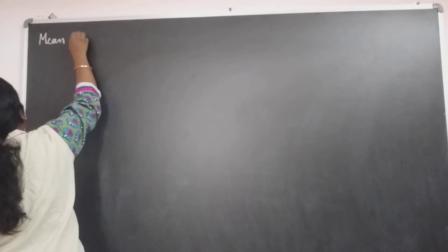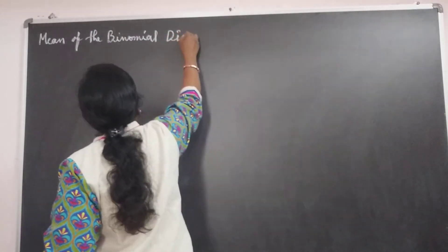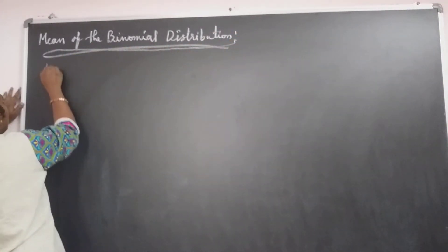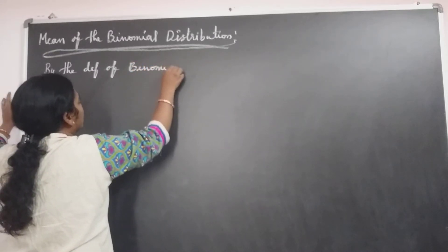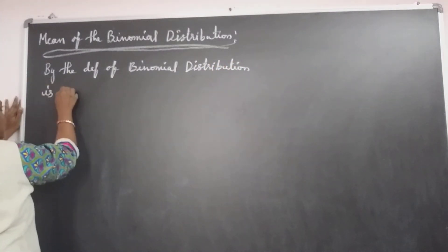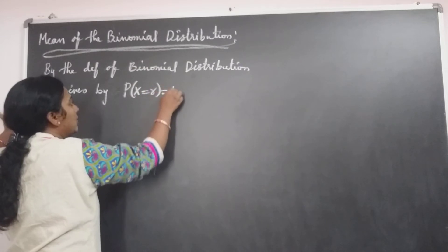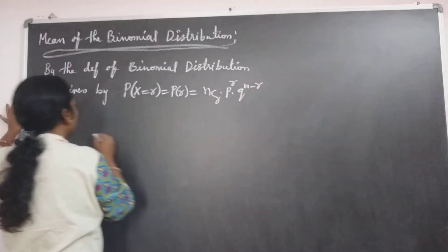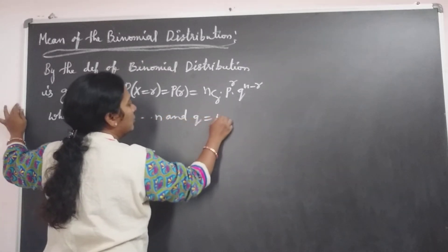It is a constant — the mean of the binomial distribution. By the definition of the binomial distribution, it is given by: P of X equal to R is equal to NCR, p power R, q power N minus R, where R equals 0, 1, 2, and so on up to N, and Q is equal to 1 minus P.